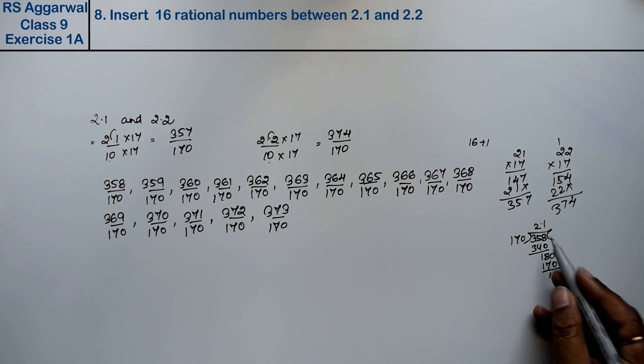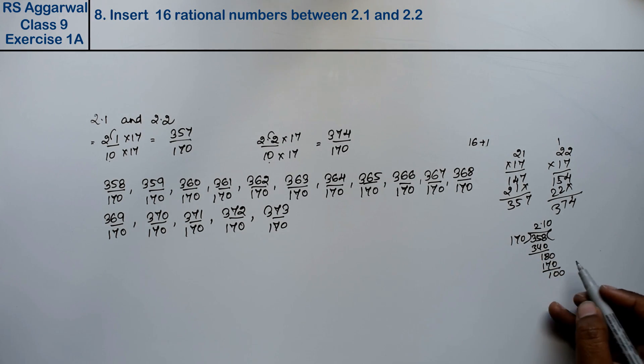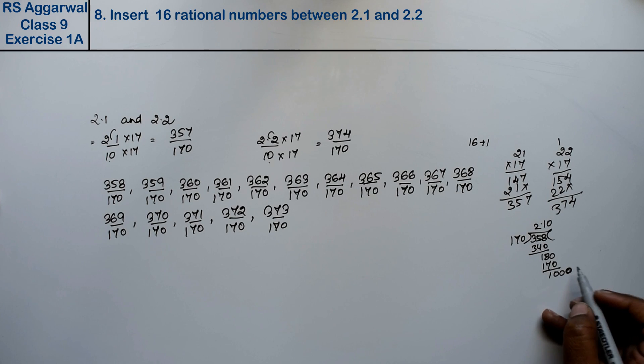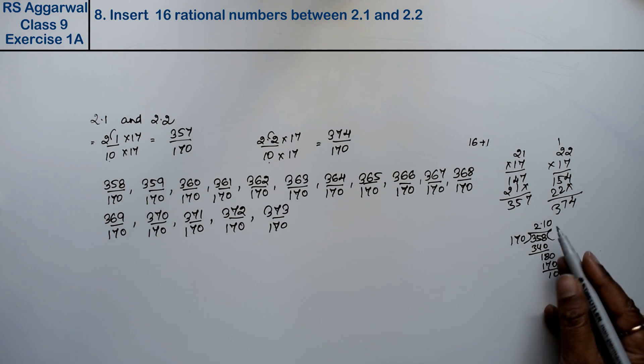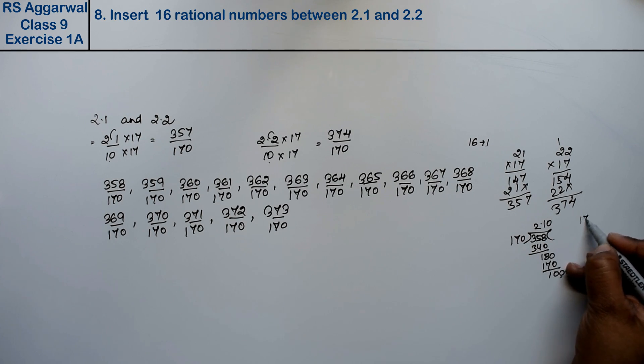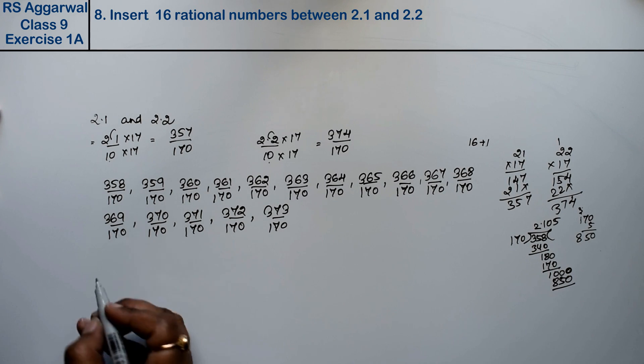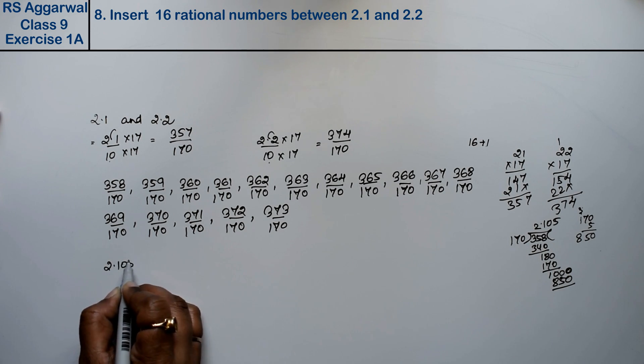2 goes into 340, so this is 18. Point, 0, giving 2.1. 170 into 100, this will go ahead. 2.1, then 10, we will add 1, 0. Here, 0. Now see, 10, because there is 0. This is 0, this is 0. 1, 7, 5, 0, 35. 5 times 850. So this is the first one, 2.105.